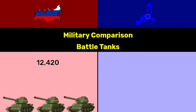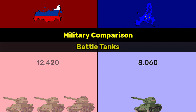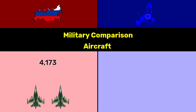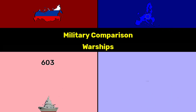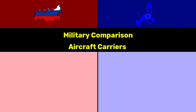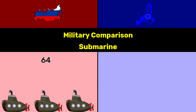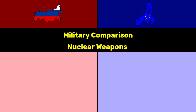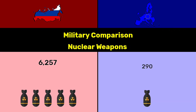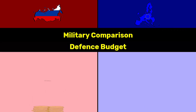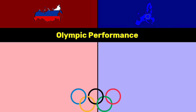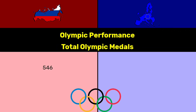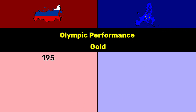Battle tanks: Russia 12,420, EU 8,016. Aircraft: Russia 4,173, EU 5,614. Warships: Russia 603, EU 1,305. Aircraft carriers: Russia 1, EU 4. Submarines: Russia 64, EU 51. Nuclear weapons: Russia 6,257, EU 290. Defense budget: Russia 70 billion dollars, EU 201.5 billion dollars.